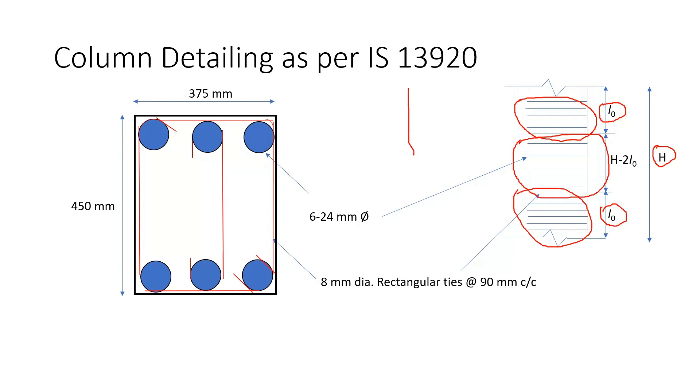So why is this provision like this? If you see the bending moment diagram of column then you can see that the maximum bending moment is more at the beam column junction. So the code suggests to provide more amount of reinforcement and closely spaced ties near the beam column junction.